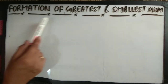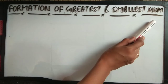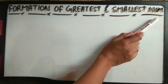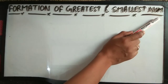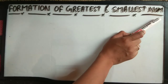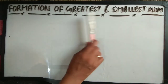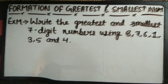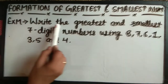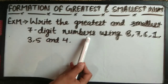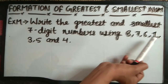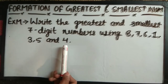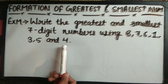Now students, we will learn formation of greatest and smallest numbers. We will learn how to create the greatest and smallest number. See an example: we will write the greatest and smallest 7-digit numbers using 8, 7, 6, 1, 3, 5 and 4. How do we do this?